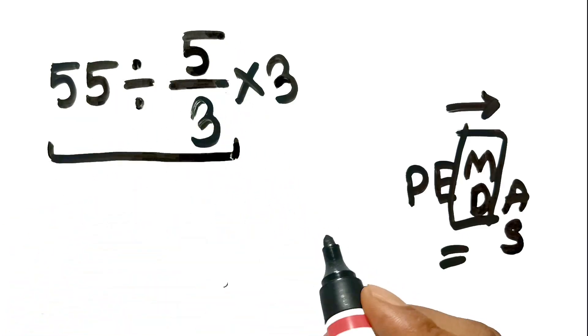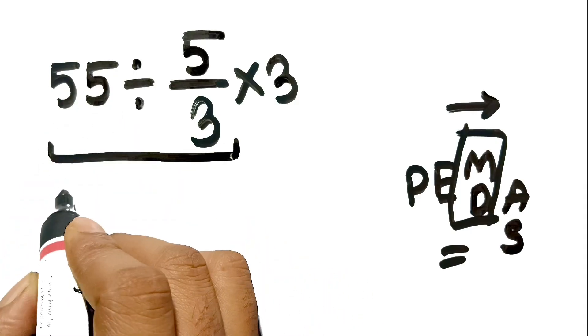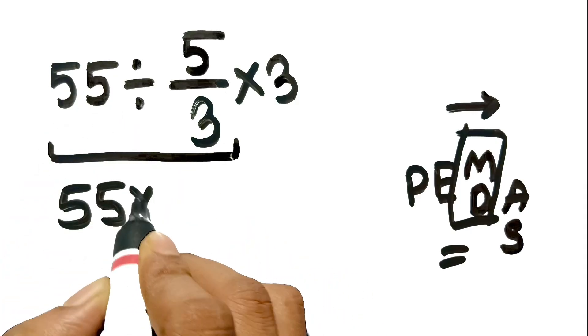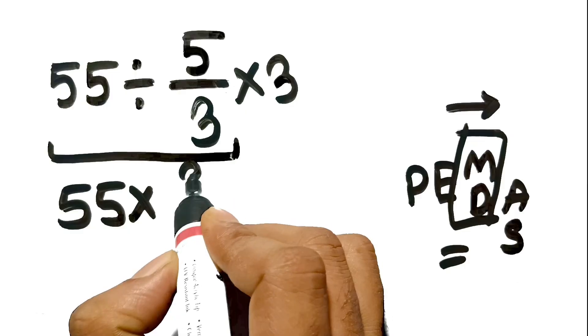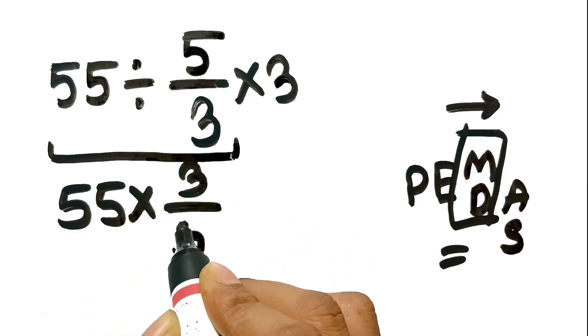Keep, change, flip. We keep 55, change the division sign to multiplication, and flip 5 over 3 to become 3 over 5.